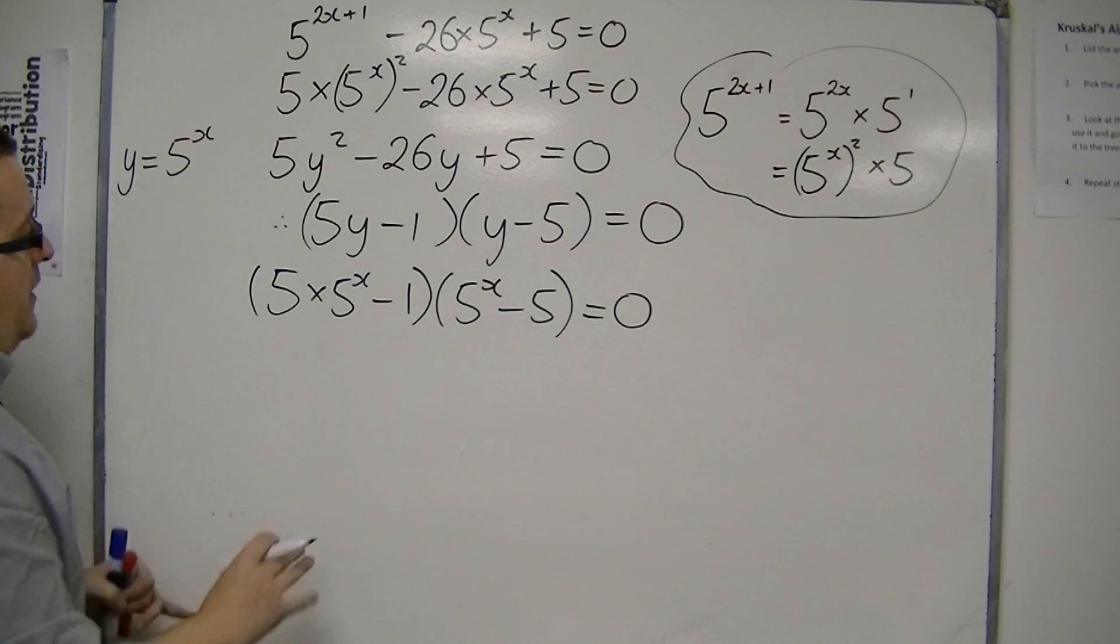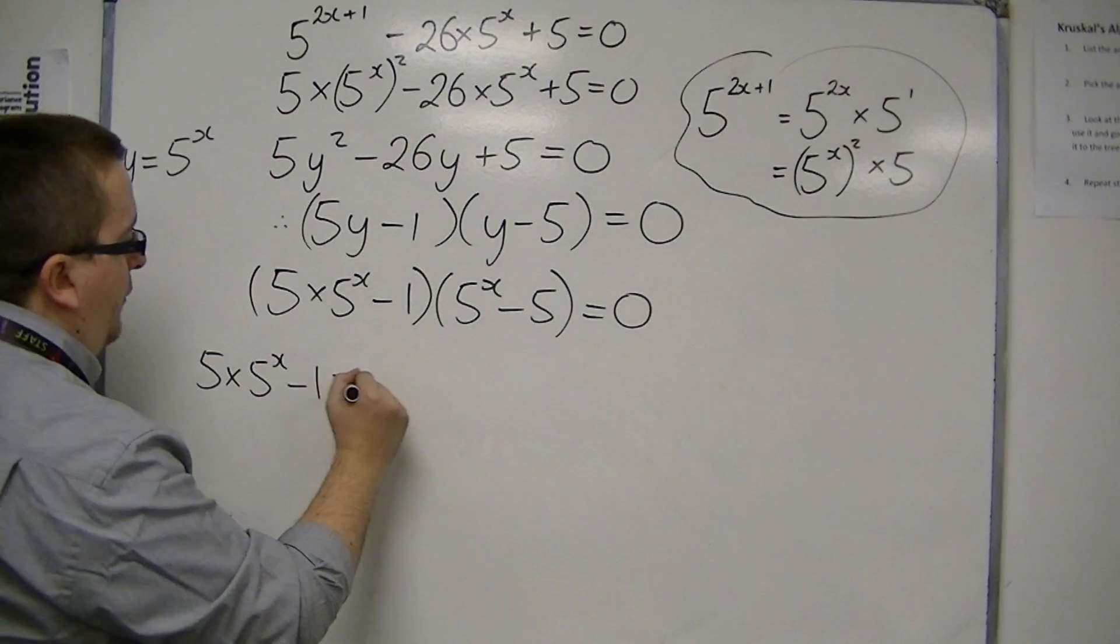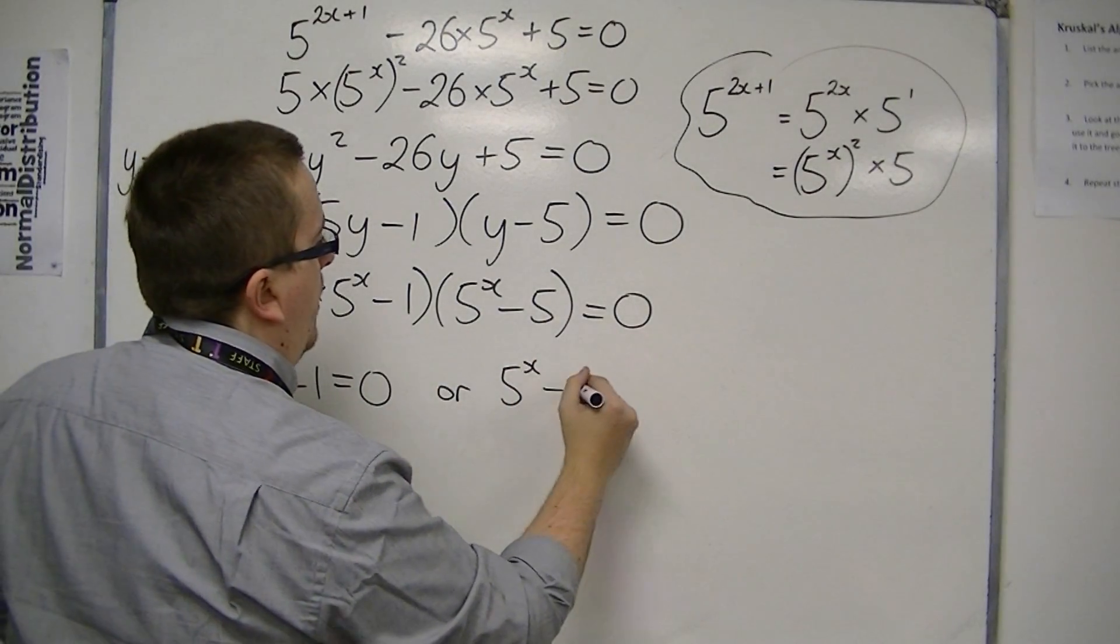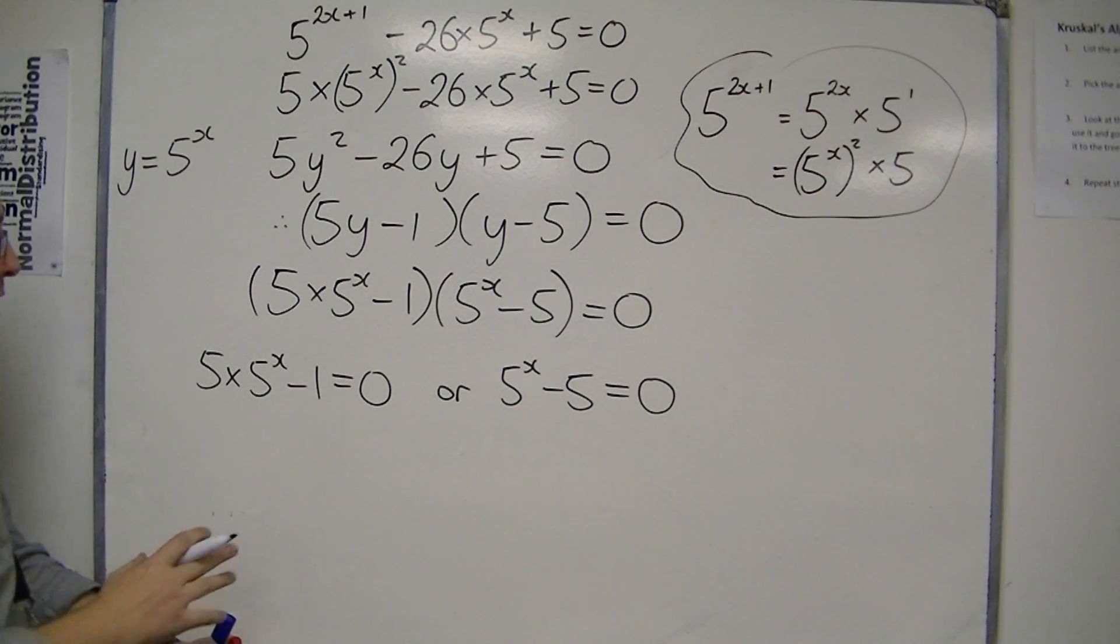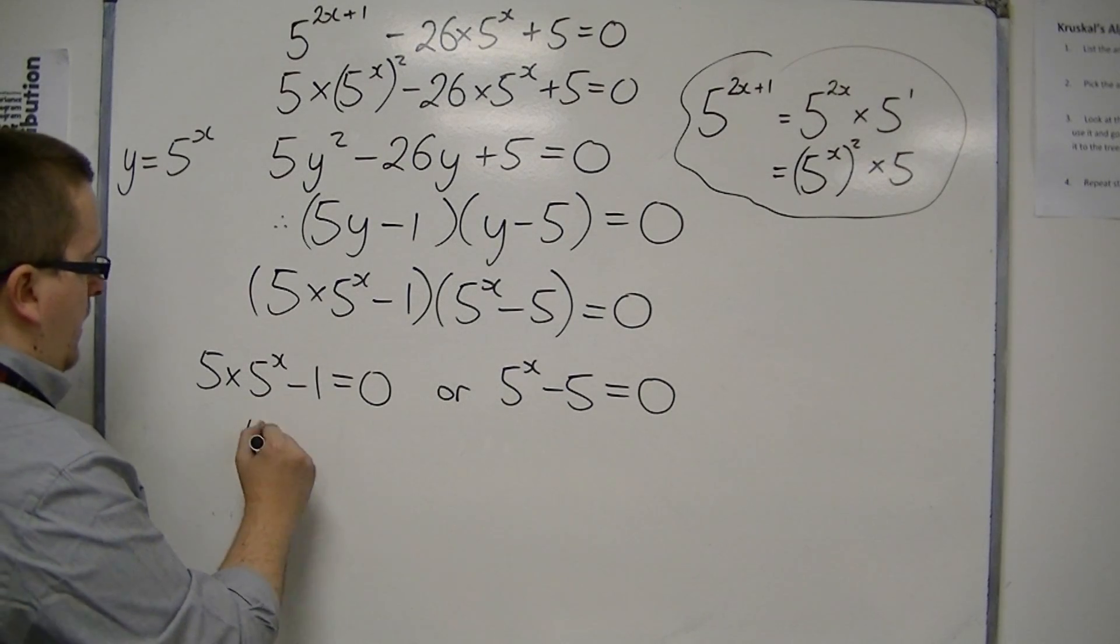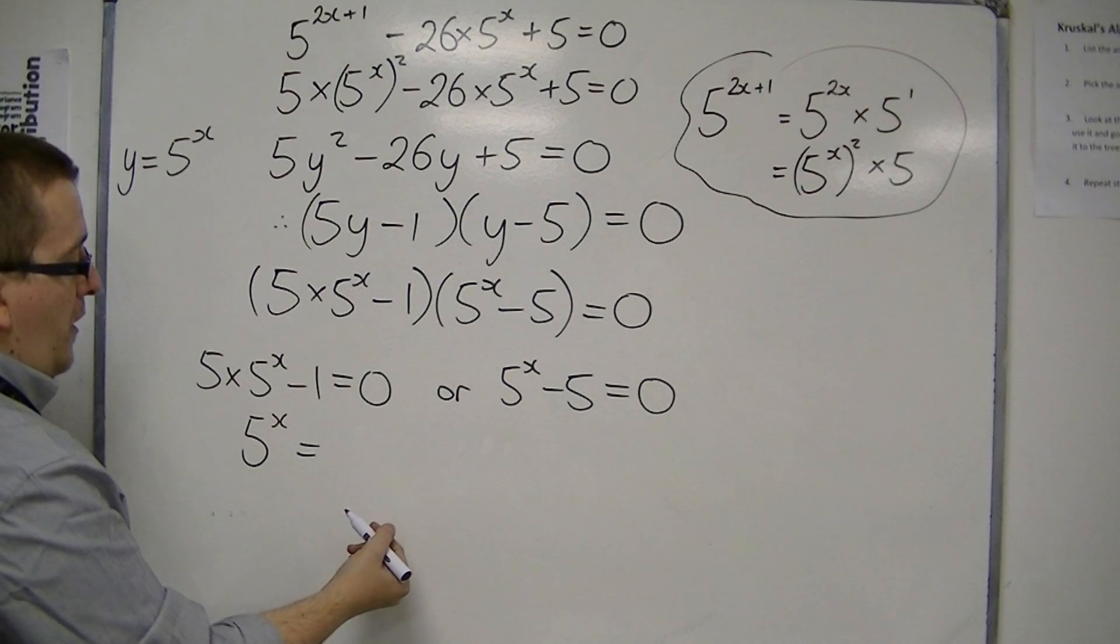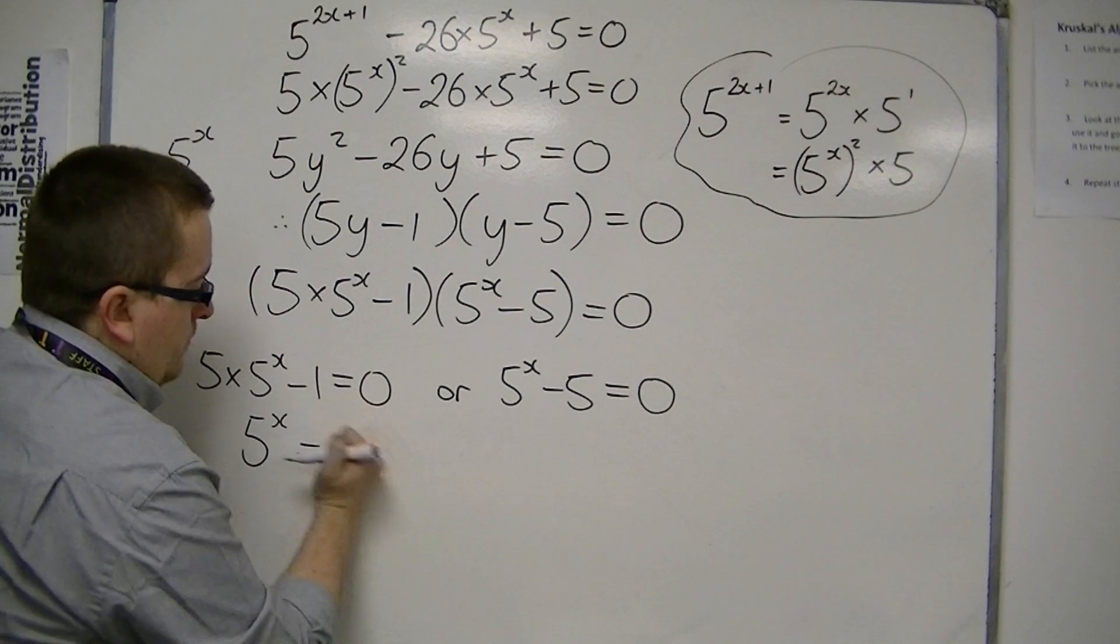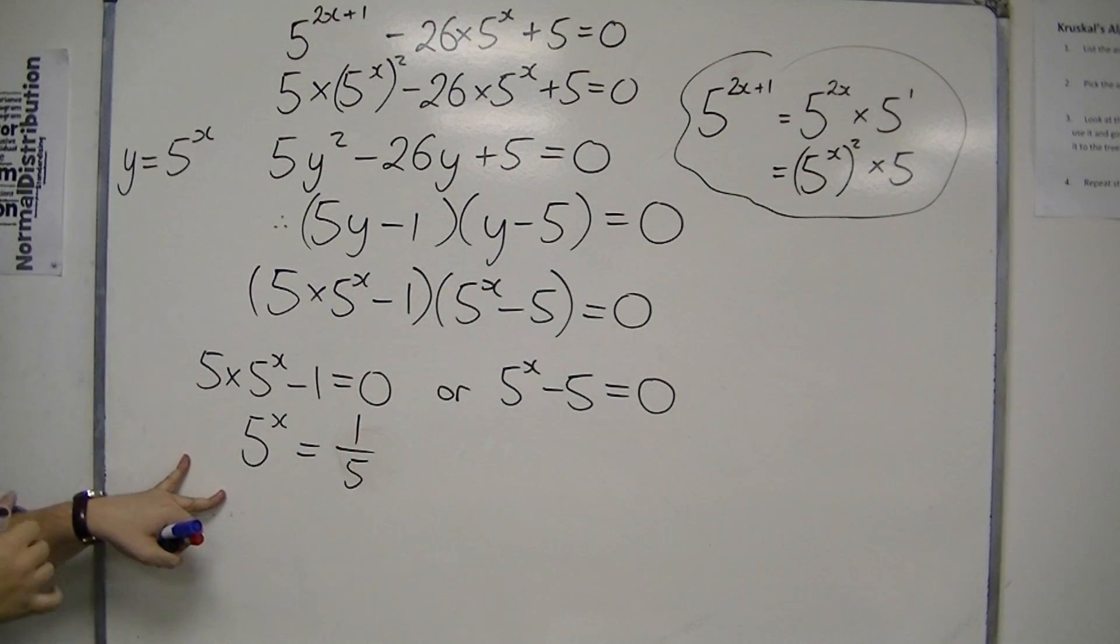So that means that either 5 times 5 to the x minus 1 is 0, or 5 to the x minus 5 is 0. Now if I rearrange this, I add 1 to both sides and divide both sides by 5. That means that 5 to the x must be 1 over 5, which is 5 to the minus 1.